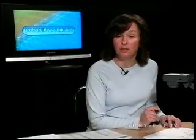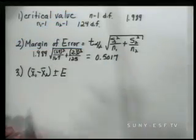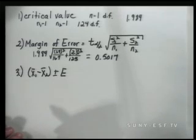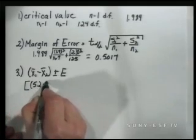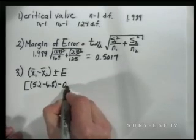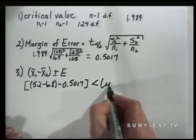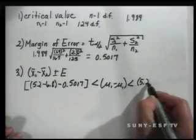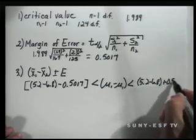The third step is the construction of the confidence interval about the difference of the two point estimates for our two populations. We look at the sample mean of the first minus the sample mean of the second, plus or minus our margin of error. This is 5.2 minus 6.8, minus our margin of error 0.5017, and plus our margin of error 0.5017.